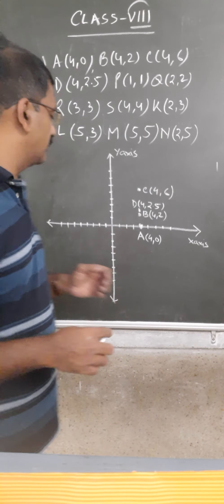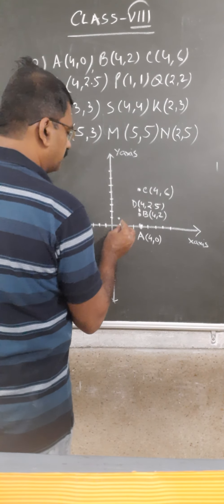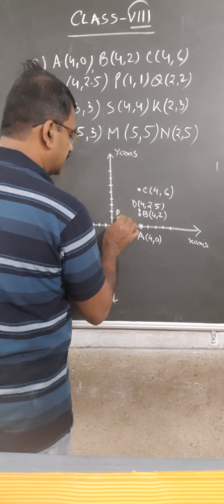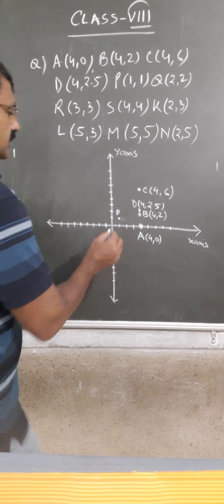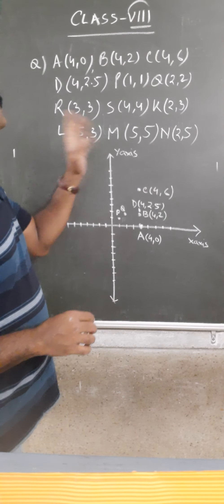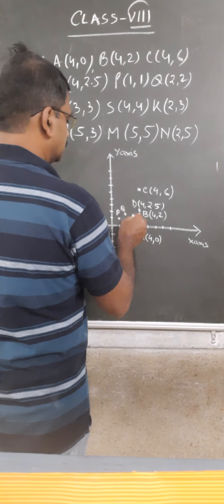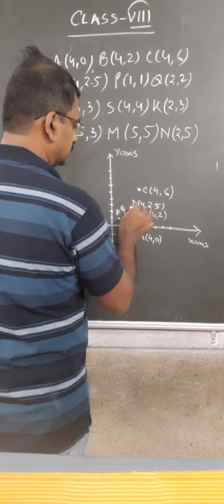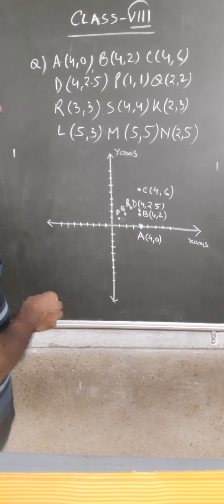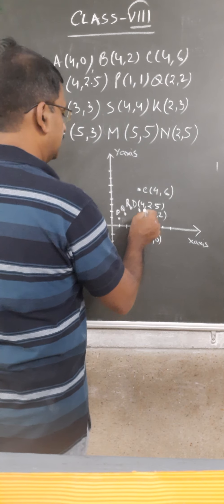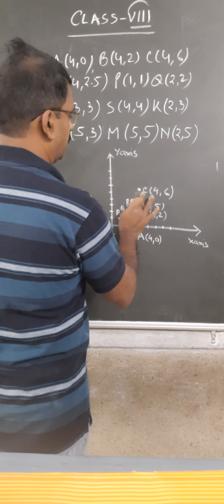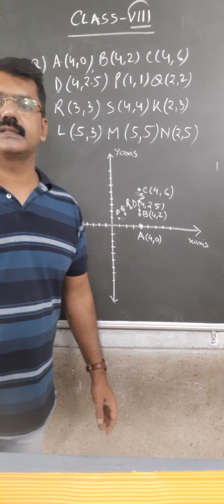Next, point P is (1, 1), so we plot it here. Point Q is (2, 2), plotted here. Point R is (3, 3), plotted here. And point S is (4, 4), plotted here. So PQRS are all plotted at their respective coordinates.